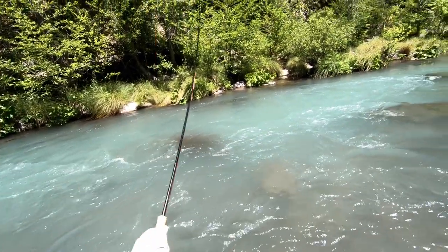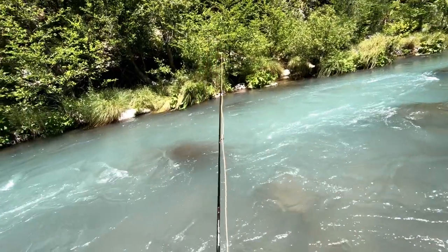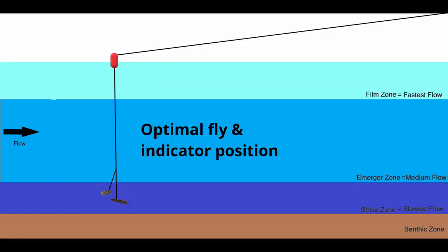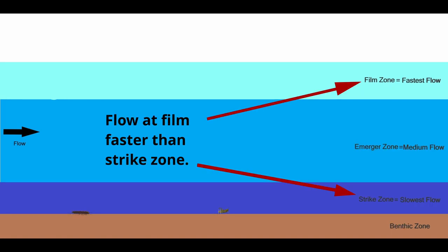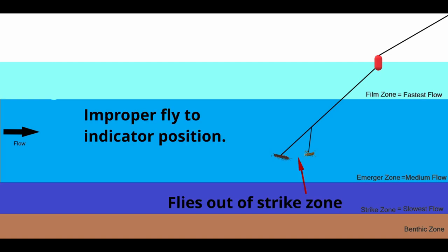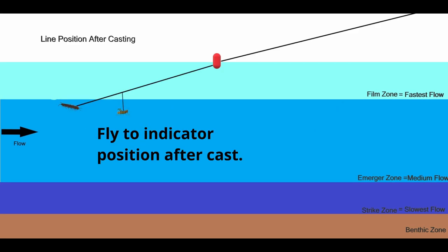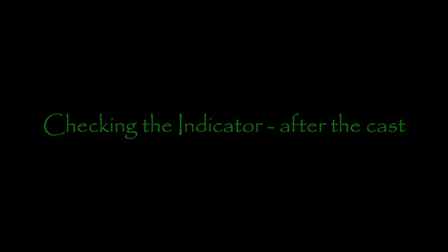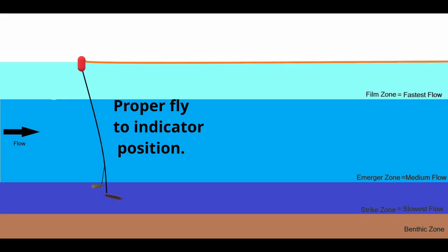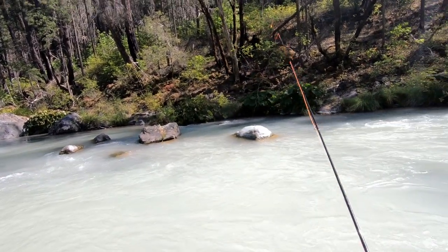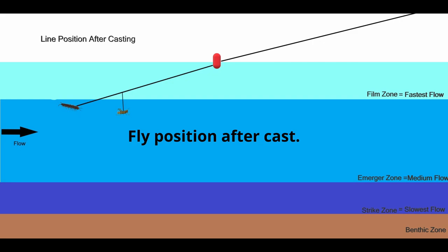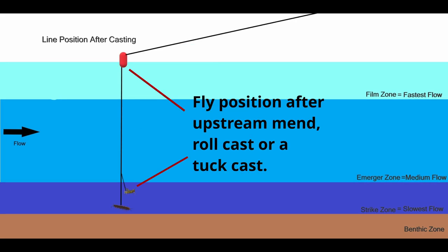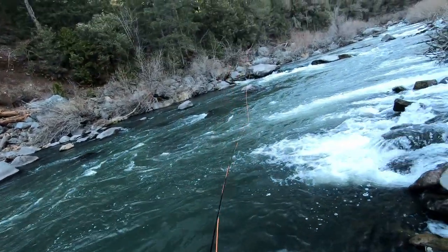To do this, a fly fisher must check the position of the leader and flies below the indicator and make any adjustments needed to position the flies in the optimal place. Remember, the water at the film is moving faster than the water in the strike zone, which means the indicator is moving faster than the flies. The key point: after making a cast upstream, your flies are going to be upstream from the indicator, putting your flies at the worst position possible. There are three ways to avoid this after casting upstream: one is to throw a roll cast in your line, two is to do an upstream mend, and the third trick is to do a tuck cast.